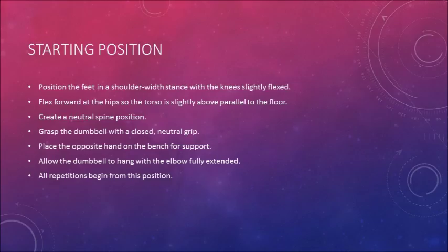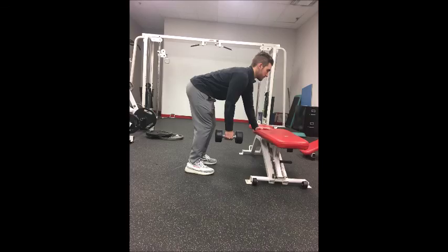We will begin with the starting position. Position the feet in a shoulder-width stance with knees slightly flexed. Flex forward at the hips so the torso is slightly above parallel to the floor. Create a neutral spine position. Grasp the dumbbell with a closed neutral grip. Place the opposite hand on the bench for support. Allow the dumbbell to hang with the elbow fully extended. All repetitions begin from this position. Here I have provided a picture of the starting position.